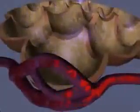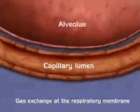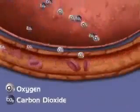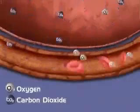Now, let's zoom into a higher magnification view of gas exchange at the respiratory membrane. Red blood cells in the capillary adjacent to the alveolus release carbon dioxide and bind oxygen.